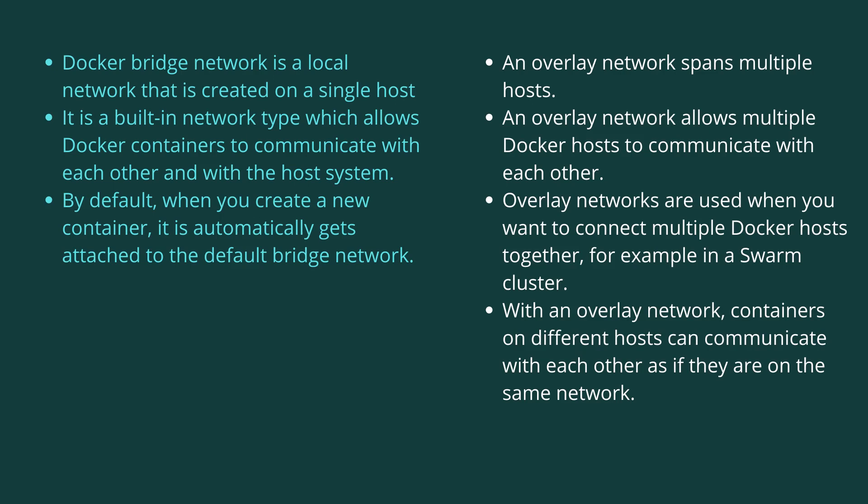Let's try to understand the difference between Docker bridge network and overlay network. The bridge network is a local network that is created on a single host. It is a built-in network type that allows Docker containers to communicate with each other and the host system. By default, when you create a new container, it automatically gets attached to the default bridge network.